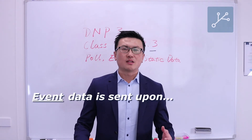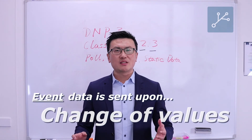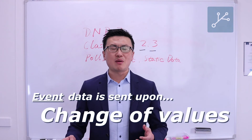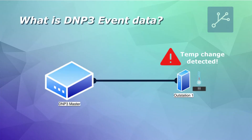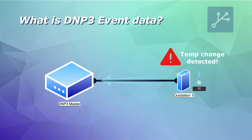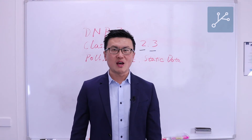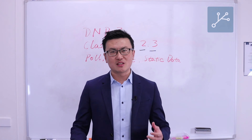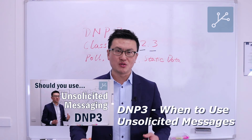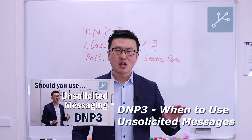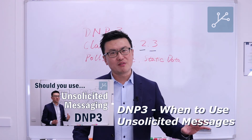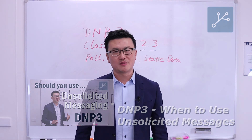Event data means that there will be some changes or events that happened on site. The outstation will then send the event data back to its master, usually via unsolicited messages. We have covered unsolicited messages in one of our other videos — please refer to that video for further information.